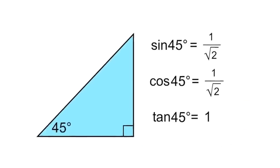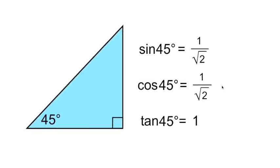So the sine and cosine of 45 degrees equal 1 over root 2, and the tangent of 45 degrees equals 1.